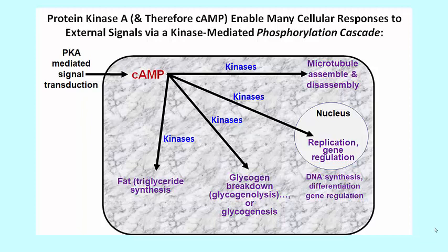This slide summarizes many of the cyclic AMP and therefore protein kinase A mediated cell responses, including changing plasma membrane permeability to specific molecules, remodeling the cytoskeleton to change cell shape, activating transcription factors in the nucleus to regulate gene expression, and even regulating protein synthesis on the rough endoplasmic reticulum, not to mention a few others.